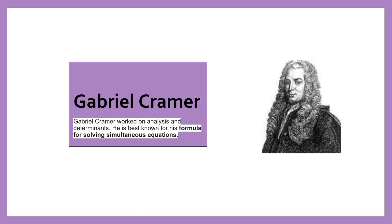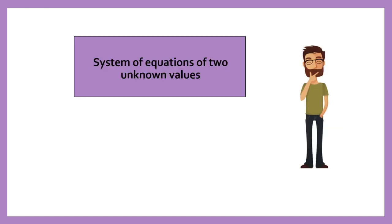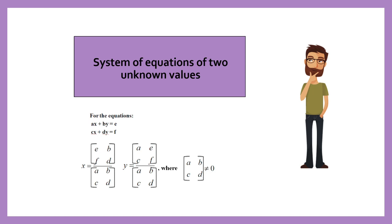System of equations of two unknown values. Theorem 1, Cramer's rule: The solution of the system of equations a1x plus b1y equals c1 is the first equation.